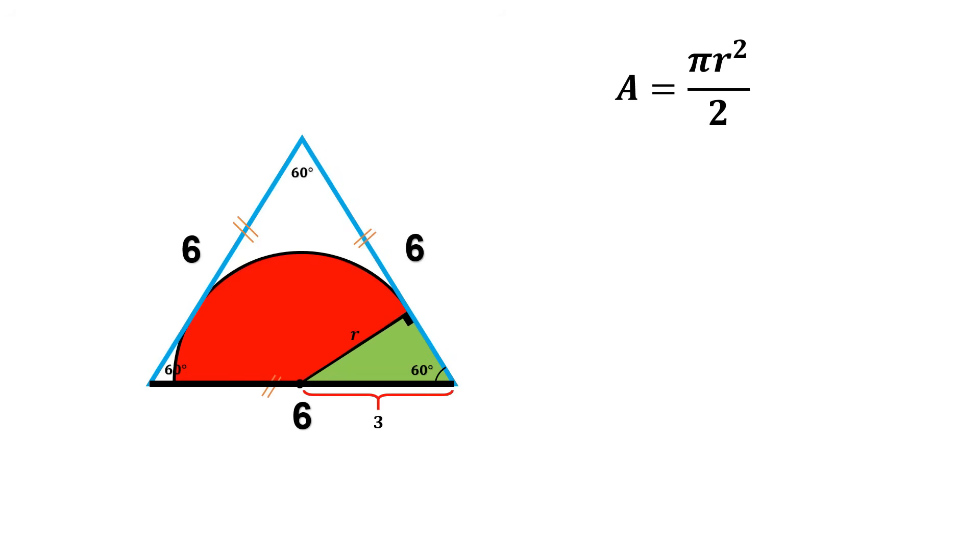So now we can use simple trigonometry. From the right triangle, we have sine 60 degrees equals r over 3.